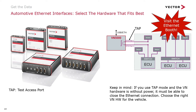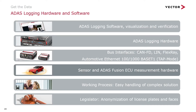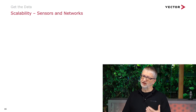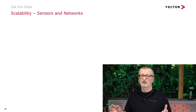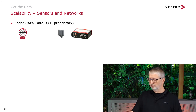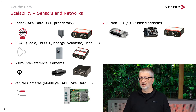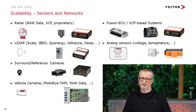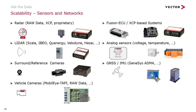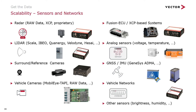You can also visit our Ethernet booth for further questions. Regarding how to connect ECU sensors and a fusion ECU to the measurement hardware — here is a small overview of the possible sensors, networks, and components: radar, LIDAR, surround cams, vehicle cameras, fusion ECUs, analog signals like voltage, ground truth or positioning, access to all vehicle networks, and other sensors such as brightness sensors. All these things can be brought together in Canopy and connected to the hardware.